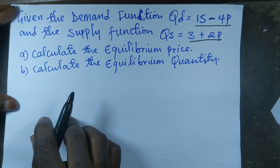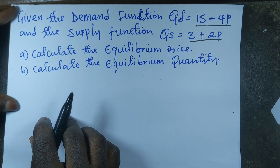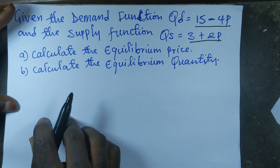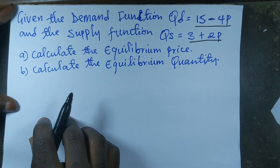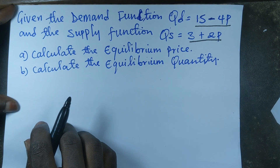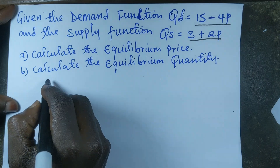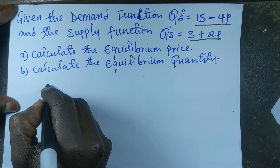Welcome to another session of Sam's Economics Tutorials. In today's video, I'm going to show you how to calculate the equilibrium price and equilibrium quantity when the demand function and the supply function are given. At equilibrium, quantity demanded is equal to supply, so at equilibrium we are going to have this equation.